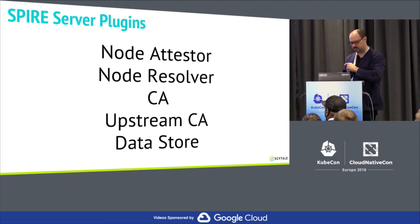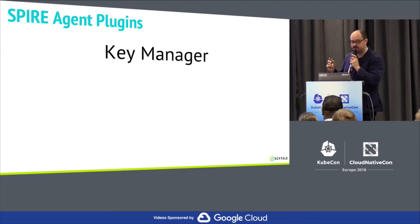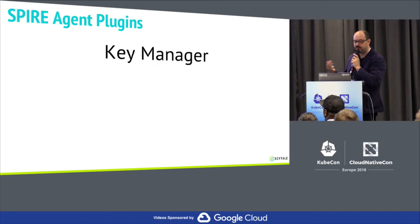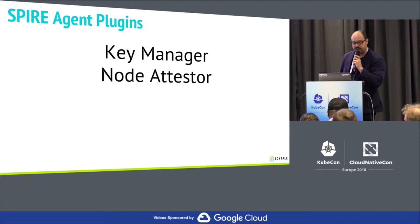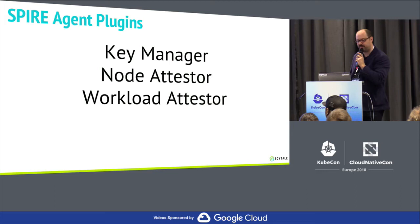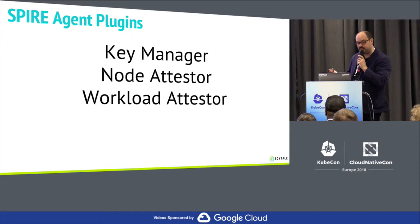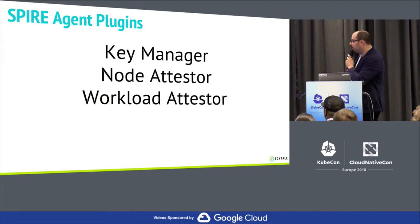On the agent side, there are three plugins. The first is the key manager, responsible for generating the CSR request and storing the public-private key pair for that node. The node attester is the pair of the node attester on the SPIRE server, responsible for platform-specific proof of identity. The workload attester is responsible for attesting the workload — you can have multiple workload attesters associated with a workload, and the API will verify the attestation policy. Once satisfied, the API delivers the SVID and bundle of federated certs to the calling process.